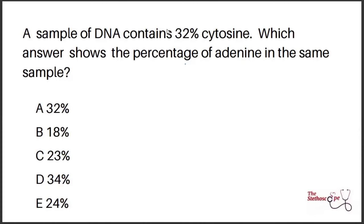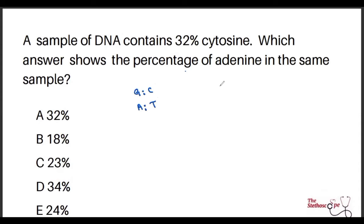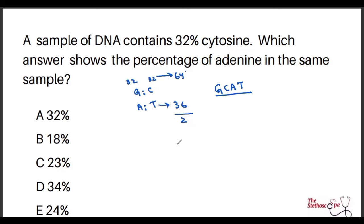Next question: a DNA sample contains 32% cytosine — what is the percentage of adenine? Remember: guanine pairs with cytosine, and adenine pairs with thymine (G-C and A-T). If there is 32% cytosine, there is also 32% guanine, totalling 64% G and C. The remaining 36% is split equally between adenine and thymine, so 36 divided by 2 gives 18% adenine. The answer is option B.